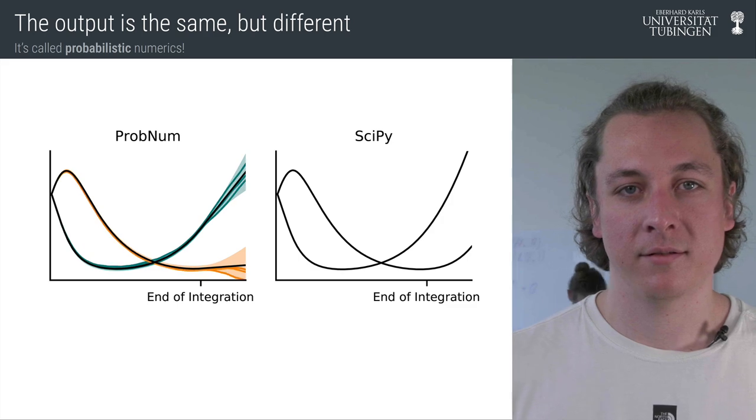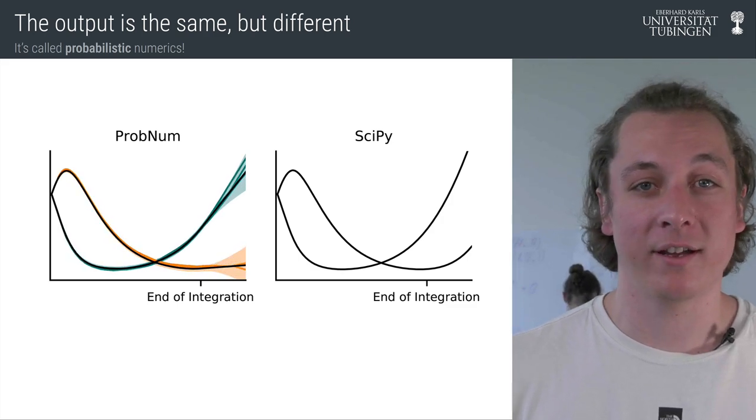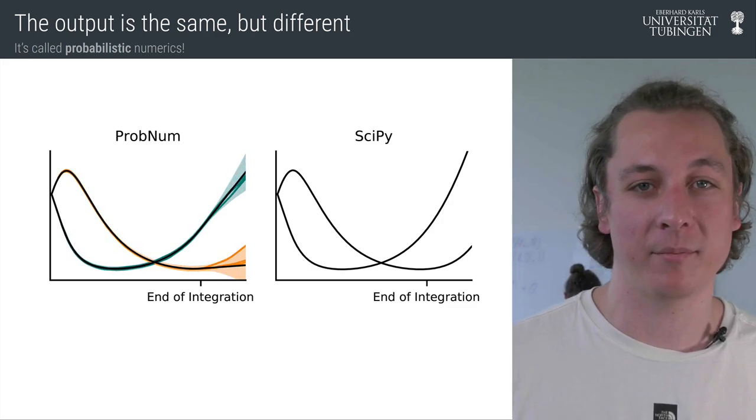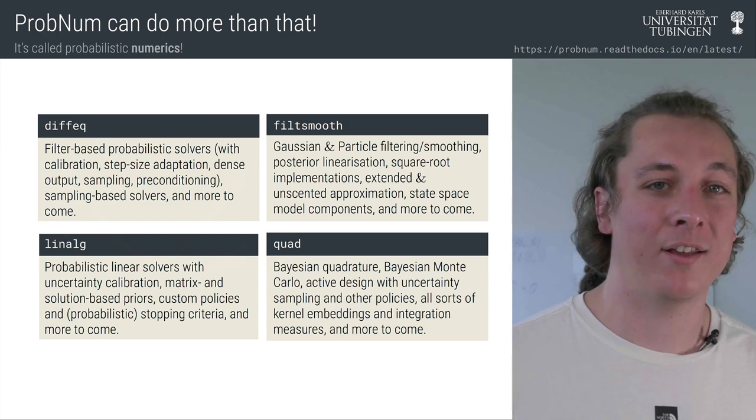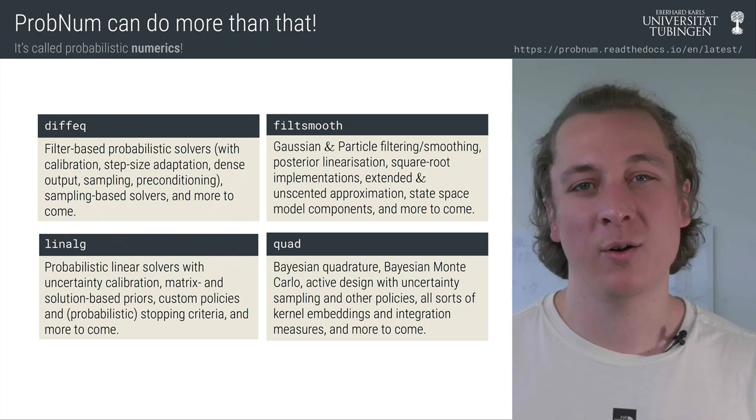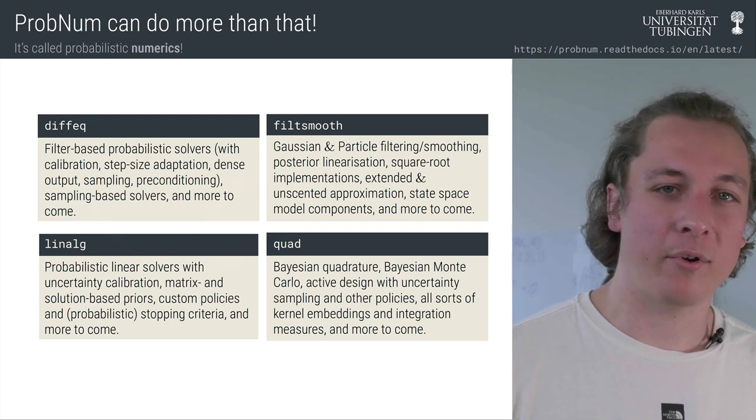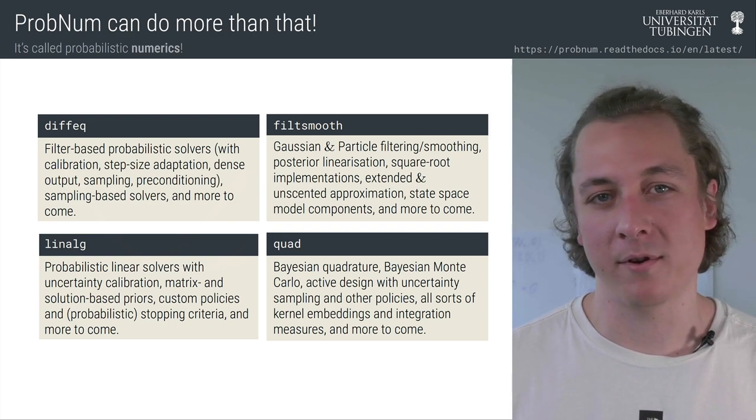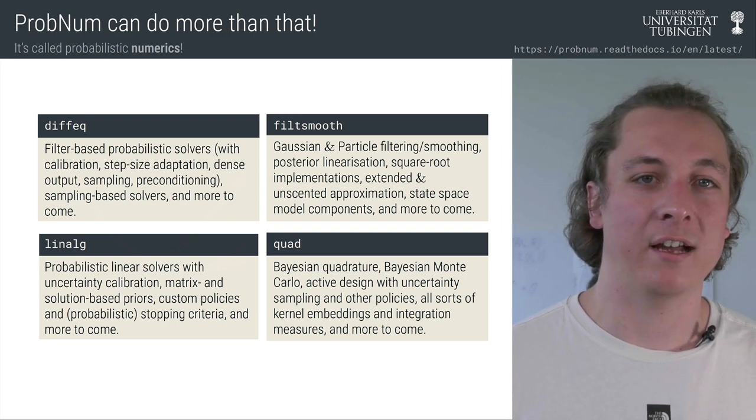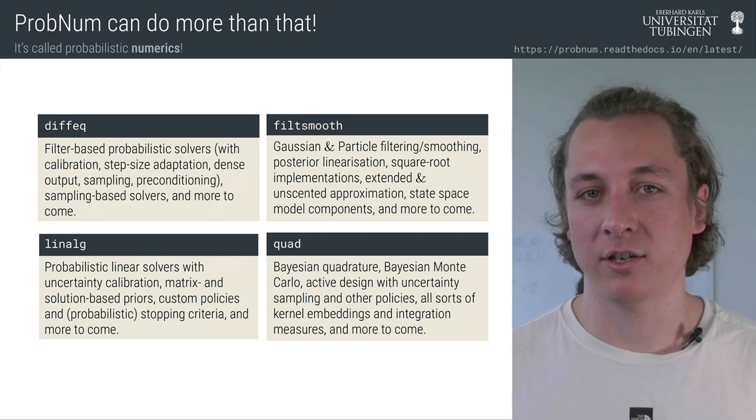Hang on, is that all the library can do? That's a great question. No, we can do more than that. Next to all of the filtering based probabilistic ODE solvers, as well as the filtering and smoothing implementations, which by the way you can use on their own as well, there are other branches of probabilistic numerics represented in ProbNum. For example, there's probabilistic linear algebra or probabilistic numerical integration.